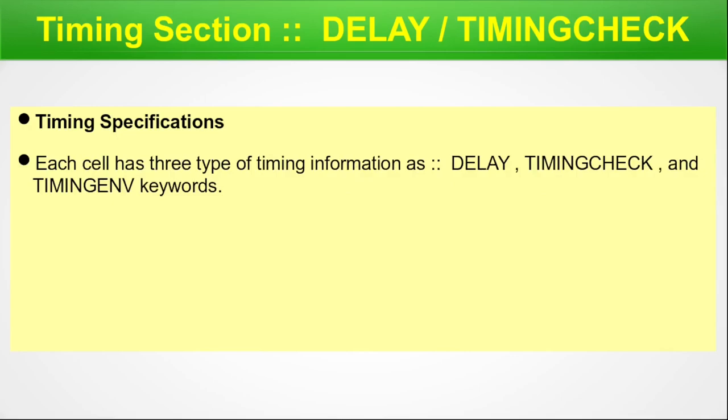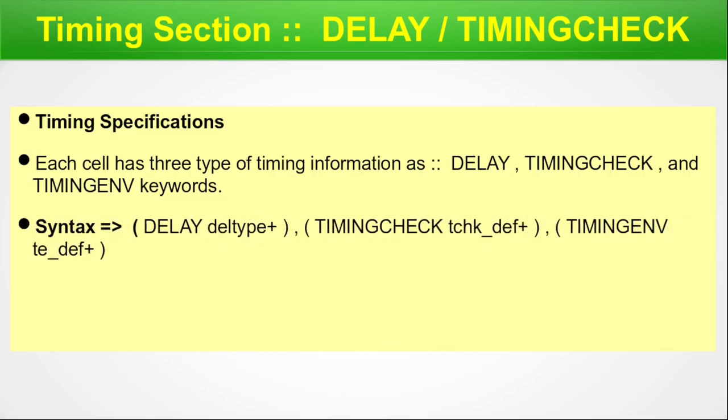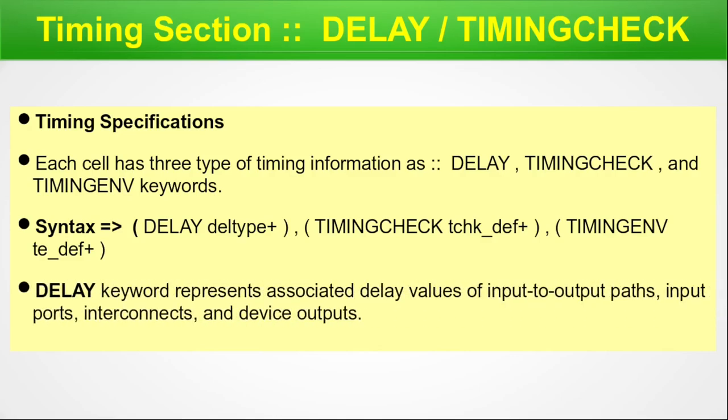Now we look at the timing section inside a cell. Each cell has three types of timing information: delay, timing check, and timing environment keywords. The syntax for delay uses DELTYPE; for timing check, a timing check definition; and for timing environment, a timing environment definition. Delay keywords represent the associated delay values of input-to-output paths, input ports, interconnects, and device outputs.